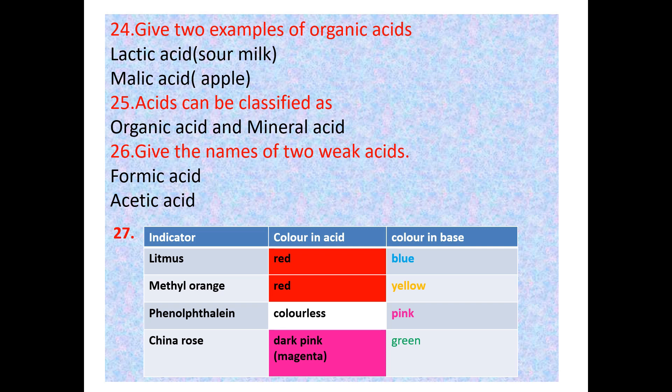Let's learn about indicators and their colors in acid and base. Litmus and china rose are natural indicators; methyl orange and phenolphthalein are synthetic or artificial indicators used in laboratories. Litmus: red in acid, blue in base. Methyl orange: red in acid, yellow in base. Phenolphthalein: colorless in acid, pink in base. China rose: dark pink or magenta in acid, green in base.